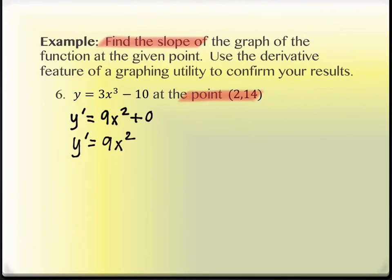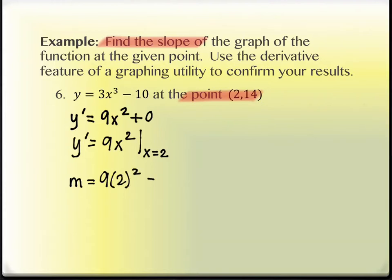We have the extra condition of evaluating at the point (2, 14). The x value is the only one needed here — plug in x equals 2. So m equals 9 times 2 squared. Remember order of operations: square the 2 first to get 4, then multiply by 9 to get 36. So the slope is 36.